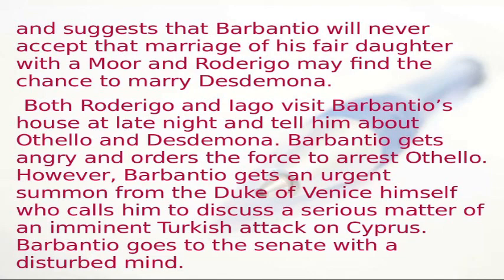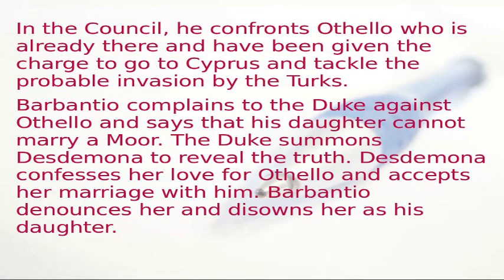However, Barbanteo receives an urgent summon from the Duke of Venice to discuss an imminent Turkish attack on Cyprus. He goes to the Senate with a disturbed mind, where he confronts Othello, who has already been given charge to go to Cyprus and tackle the probable Turkish invasion. Barbanteo complains to the Duke against Othello, saying his daughter cannot marry a Moor. The Duke summons Desdemona, who confesses her love for Othello and accepts the marriage. Barbanteo denounces and disowns her as his daughter.